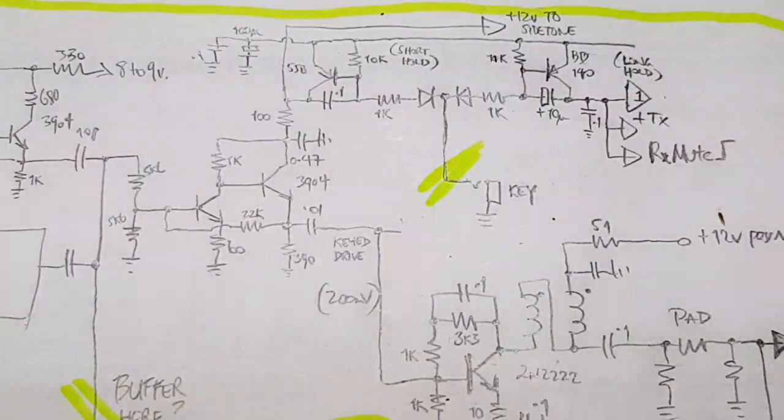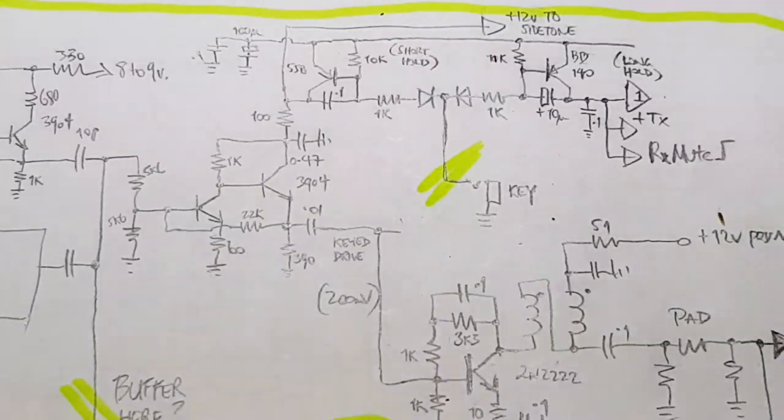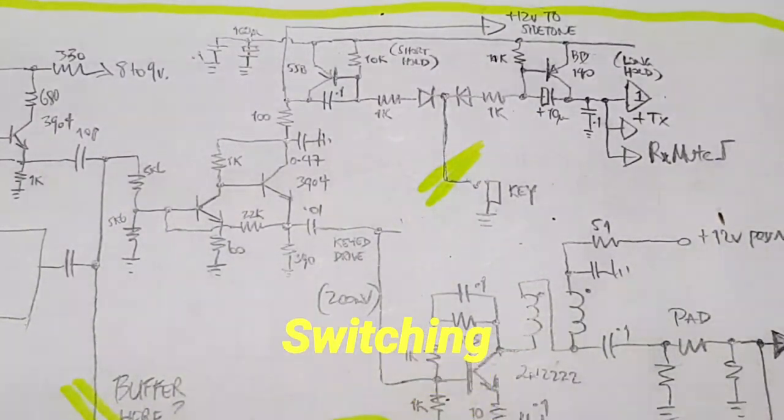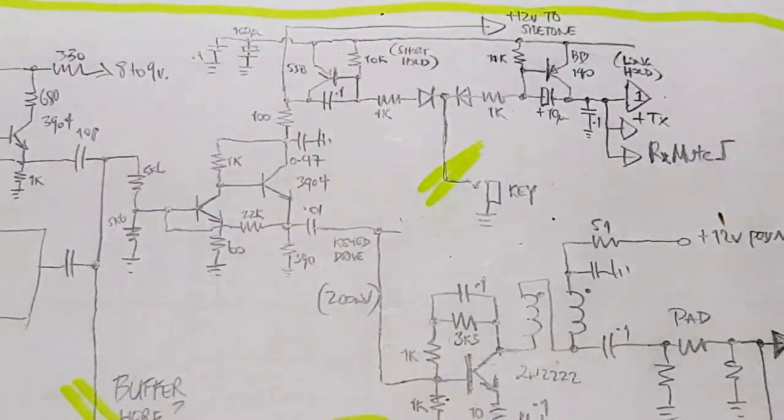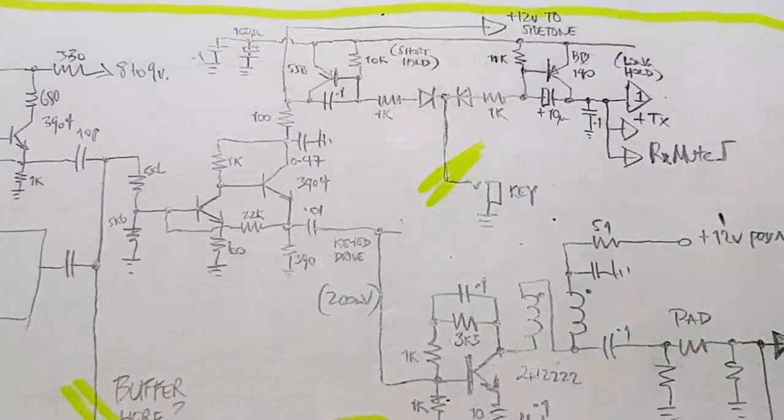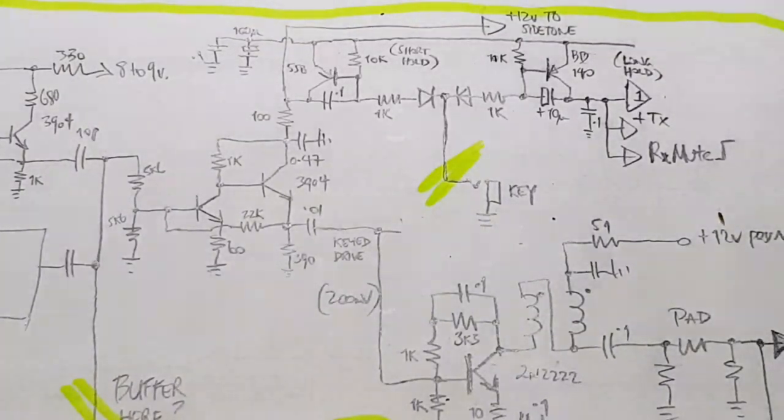If you are building a CW transmitter or transceiver with an Arduino that's running software, then you've got the great advantage that you can do all of the controls, the transmit-receive switching and even the CW generation in software. But if I'm reverting back to a crystal oscillator, no microcontroller, no SI5351, then you have to come up with ways of sequencing between transmit and receive.